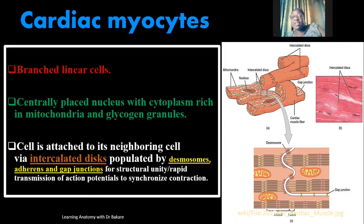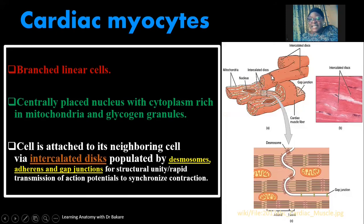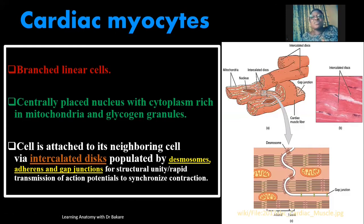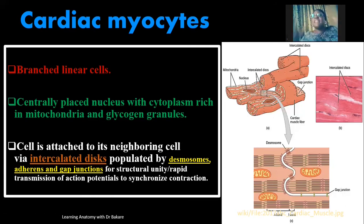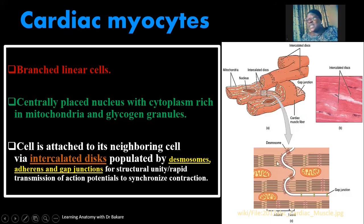The intercalated discs structurally link the cells together. Within the intercalated disc, we have desmosomes, adherens junctions, and also gap junctions. This structural presentation allows the transportation of ions, and if ions can be transported from one cell to another, there will be transmission of action potential. With action potential being transmitted, there is synchronized contraction — so contraction is not limited to one cell but transmitted along the cells, allowing the entire myocardium to work as a unified entity, contracting and relaxing to pump out blood.